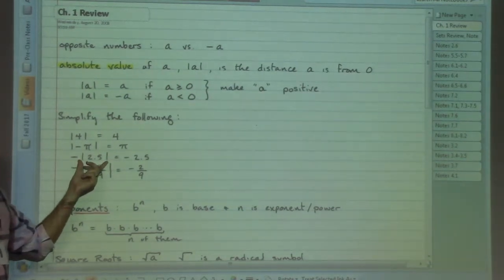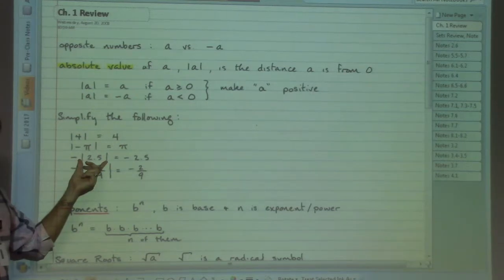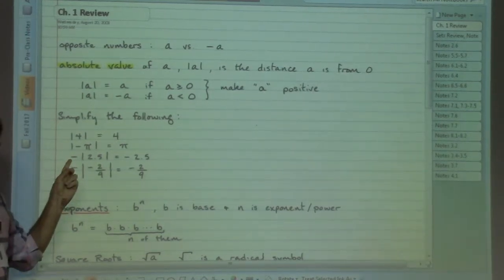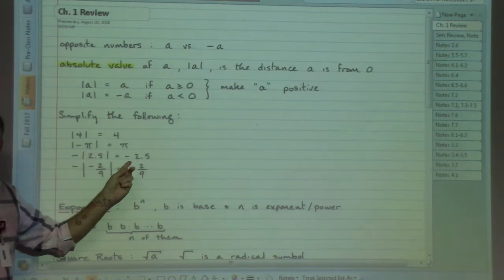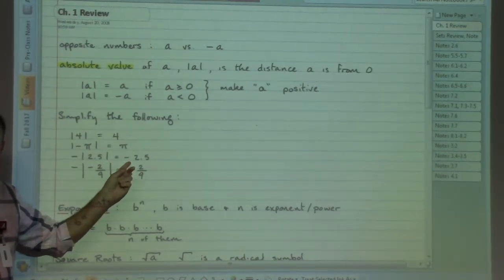In this case, we've got the absolute value of 2.5. That 2.5 is going to stay positive, but then it has negative influences on it when it gets out of math jail. And so overall, that number will be a negative.